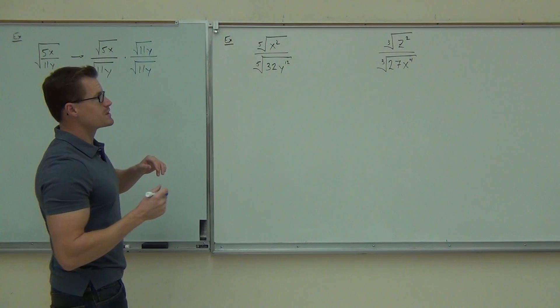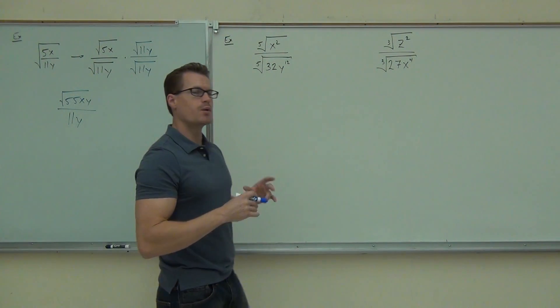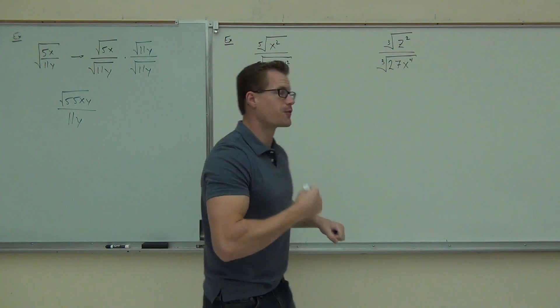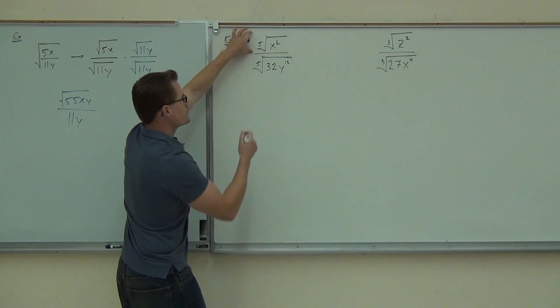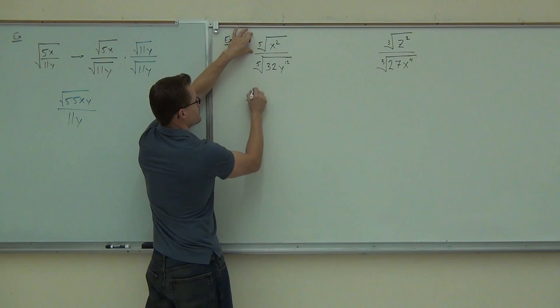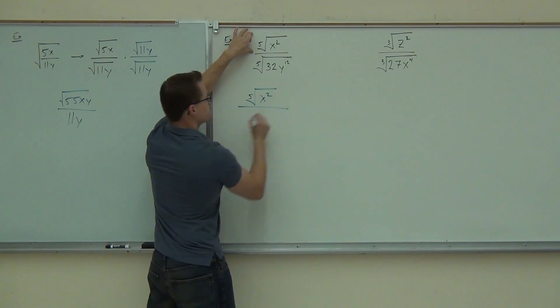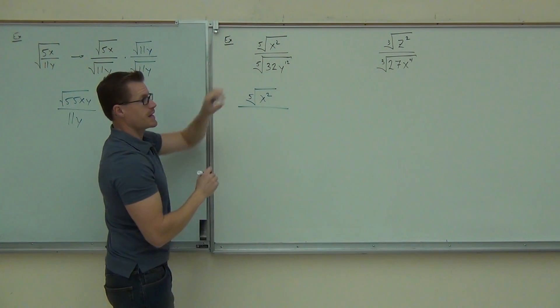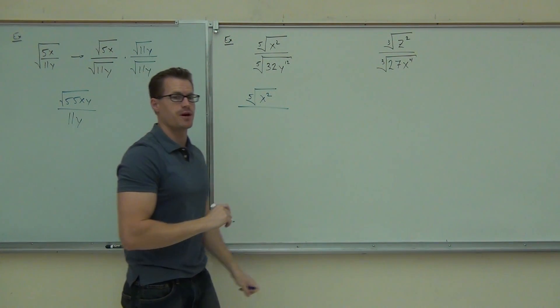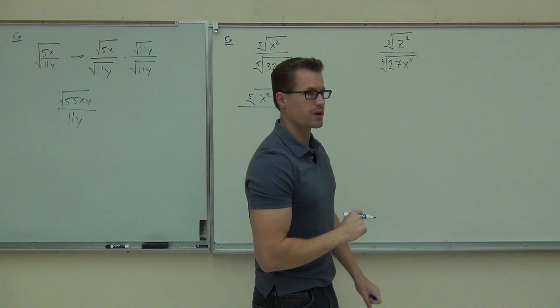So with this example, yes we're rationalizing, but we need to simplify first. Our numerator — we can't really simplify that. The denominator though, yeah, we can simplify the 32y squared.